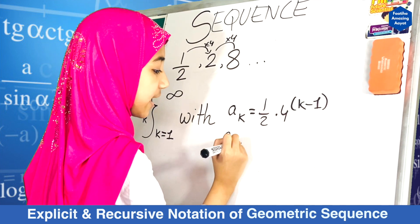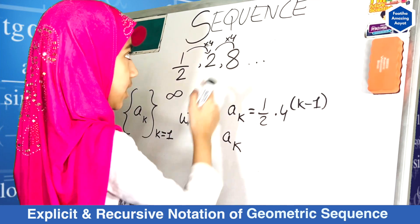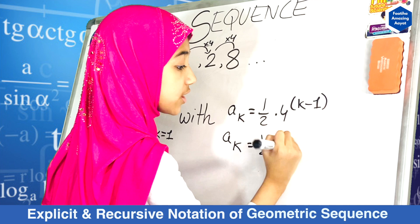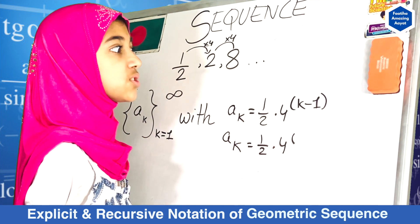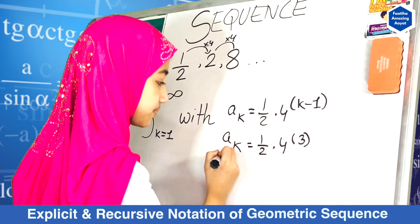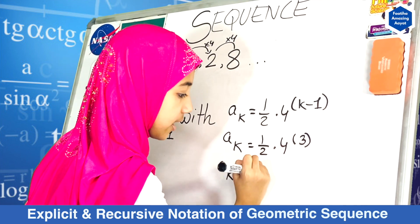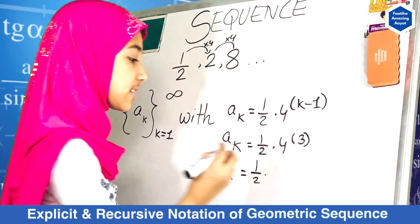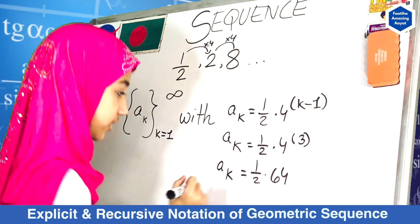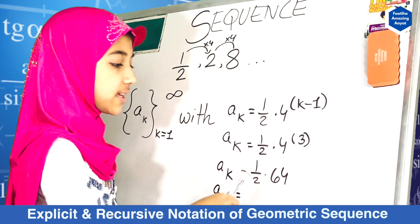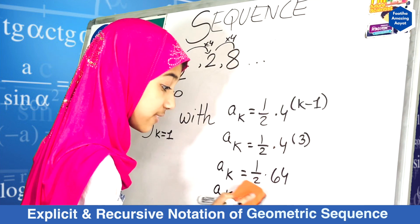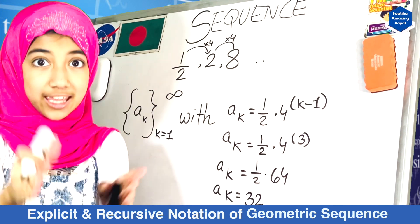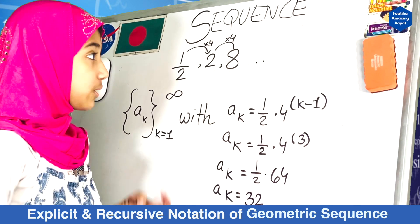Now let's test it out. Let's say we want to figure out the fourth term, and A times 4 is 32. So it is equals to half times 4 to the power 4 minus 1, which would actually be 3. So A sub k is equals to half times 4 to the power of 3. 4 times 4 is 16, and 16 times 4 would be 64. That would be 64 divided by 2, and 64 divided by 2 would actually be 32.